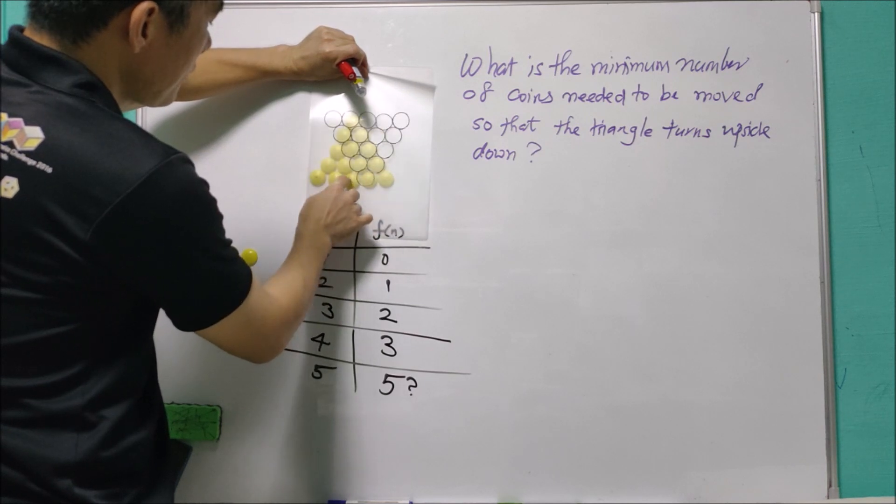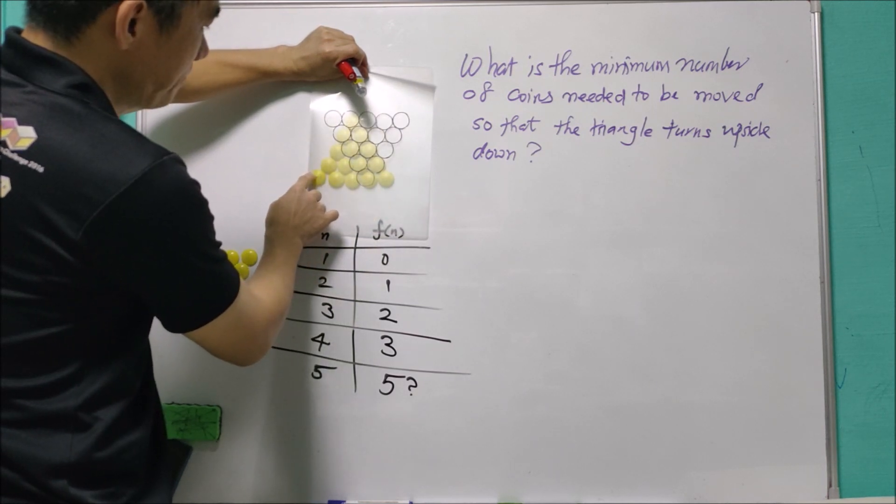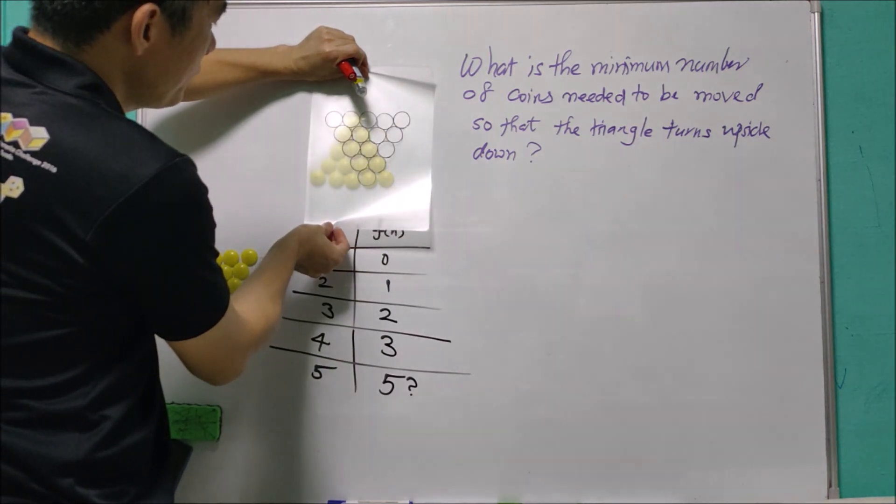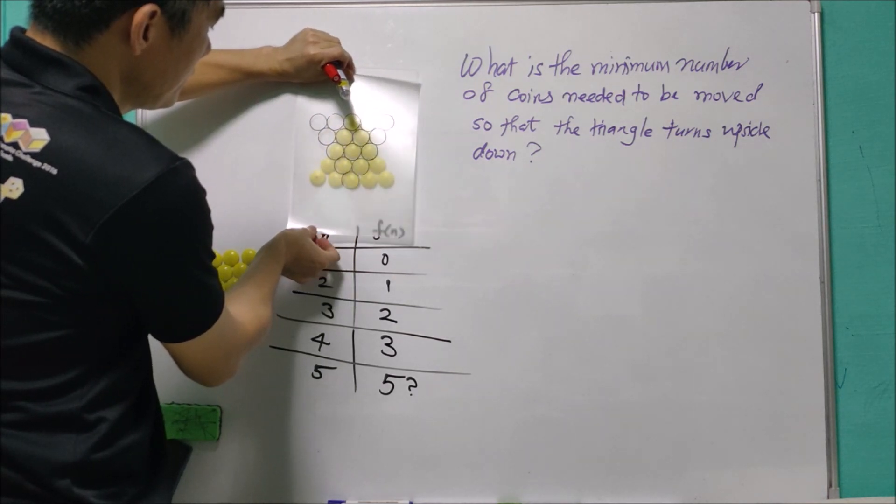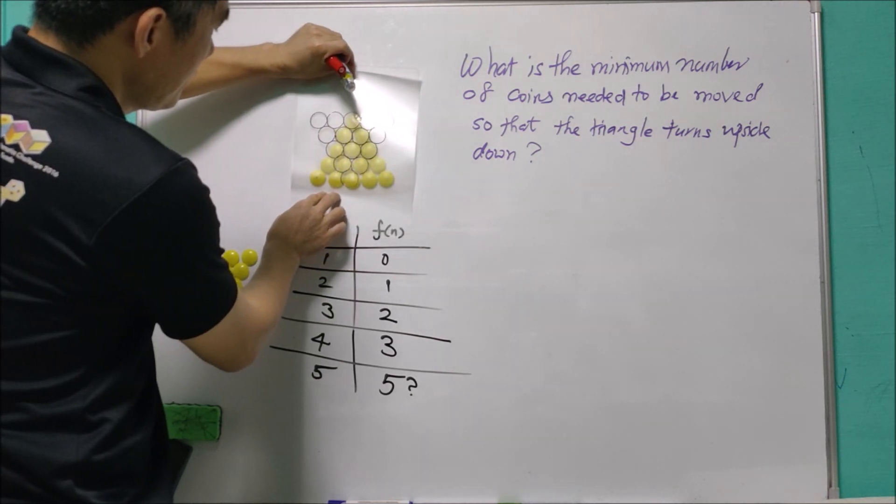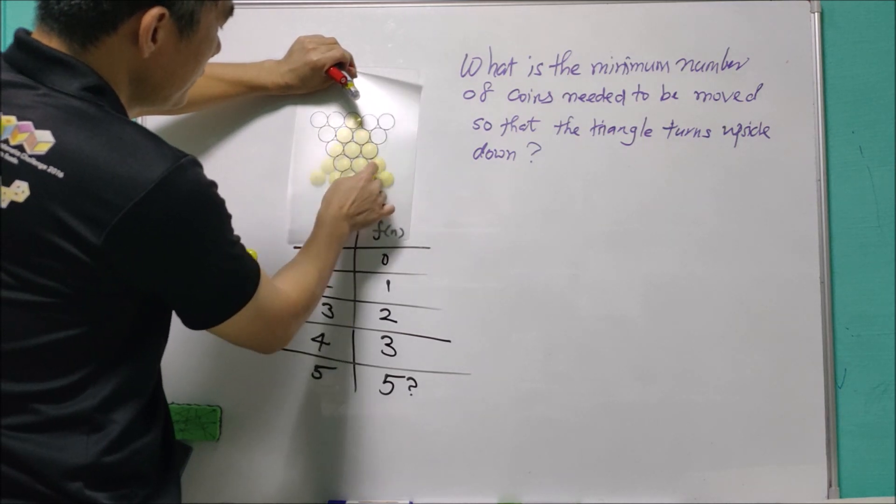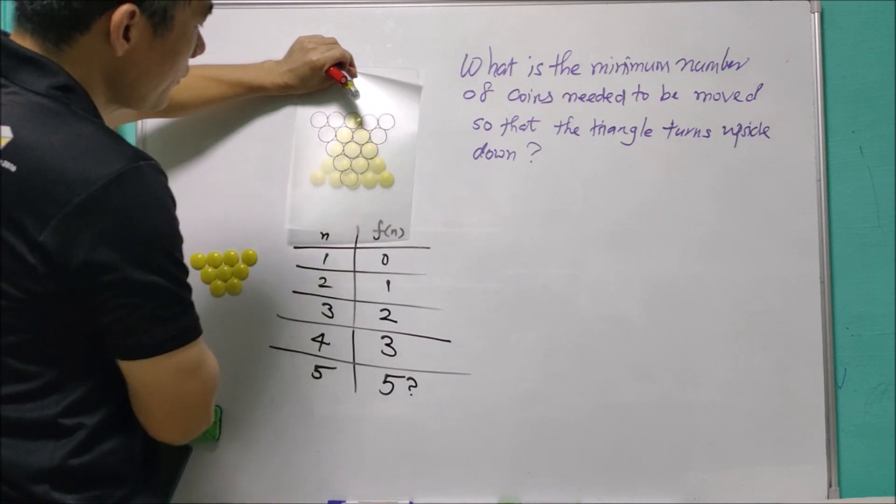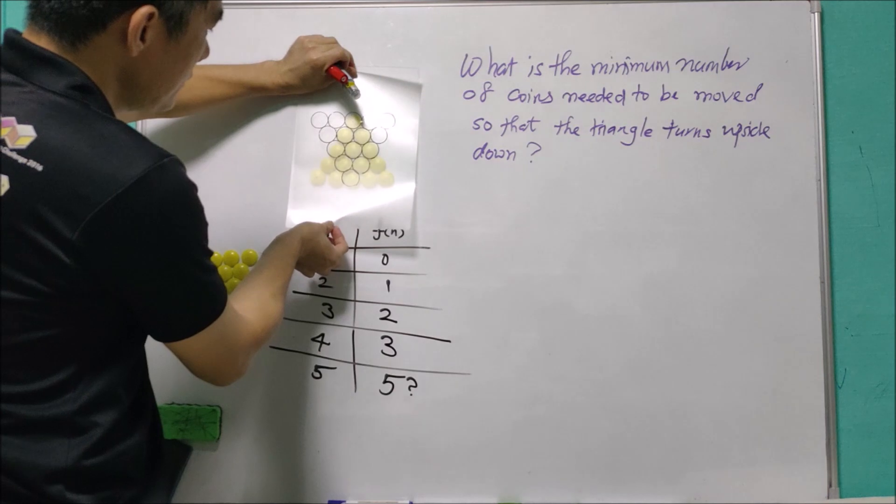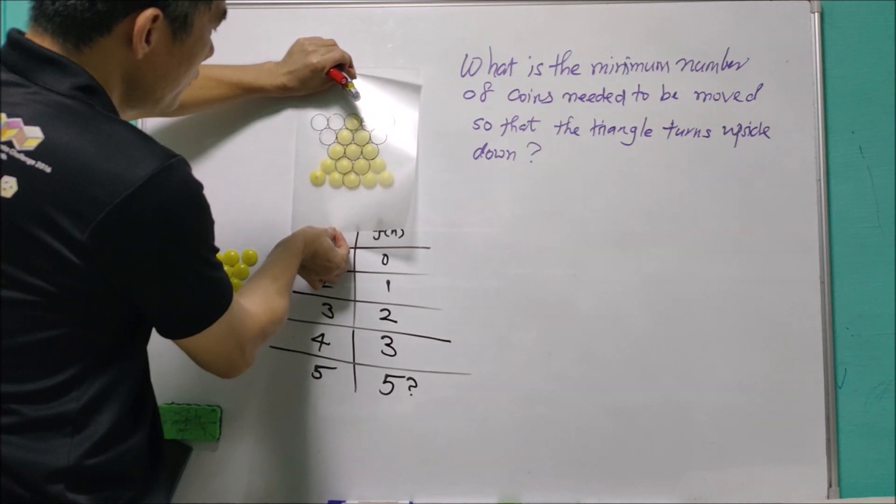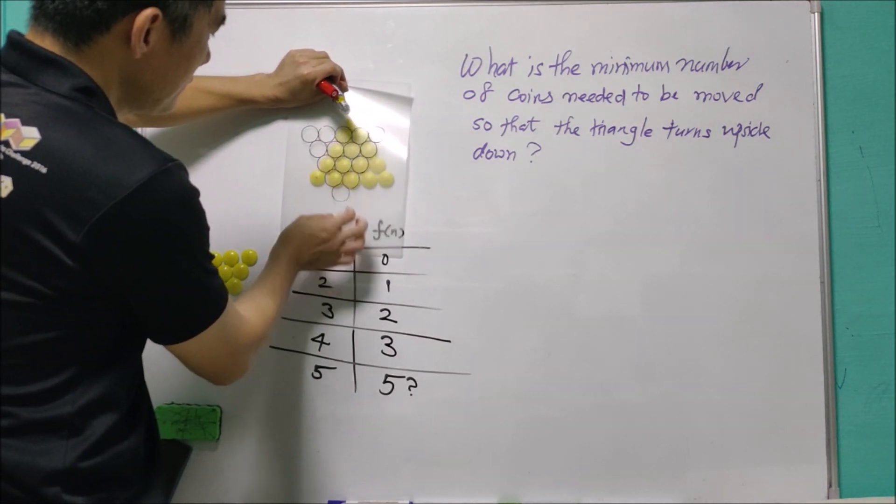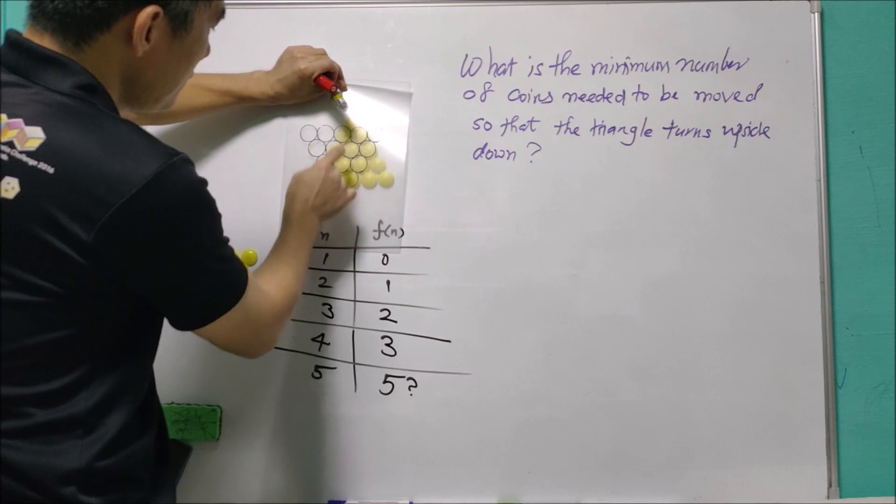Seven coins that are not overlapping. I think we can do a little bit better here. We need to move six coins.